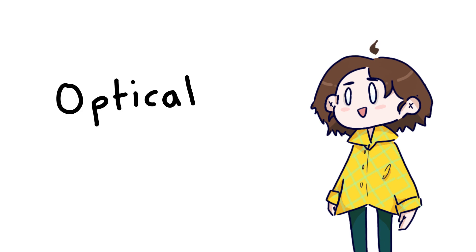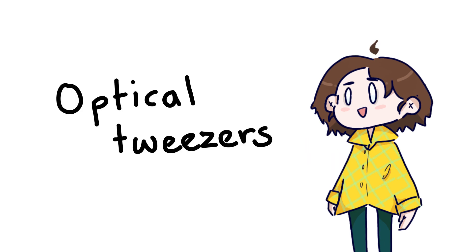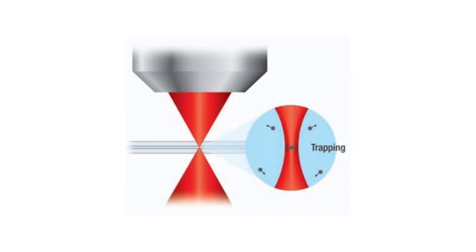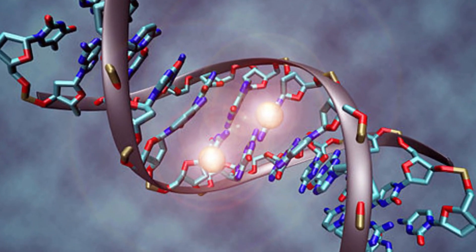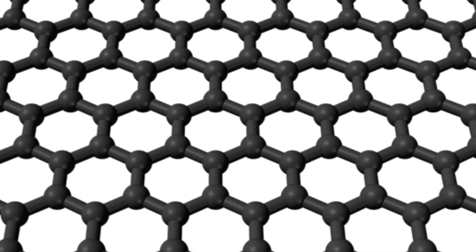There are also these things called optical tweezers, which are exactly what they sound like. Very precise laser beams that can hold tiny things, such as atoms and nanoparticles. So you can hold cells, DNA, and study them, and you can even use tweezers to build materials from single molecules if you wanted to.